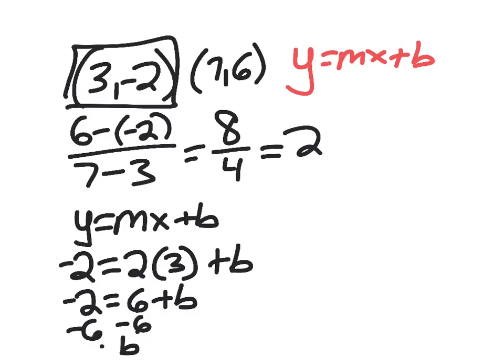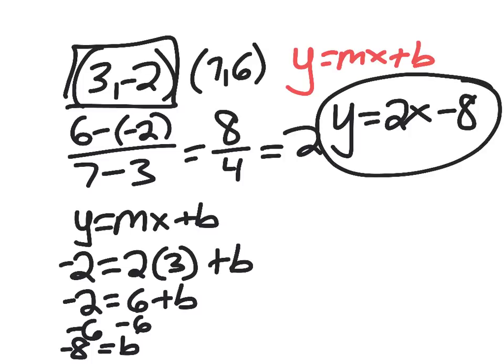So I end up with my intercept equals negative 8. Now I'll go back to slope-intercept form and replace my slope with 2 and my intercept with negative 8. And that would be my final answer.